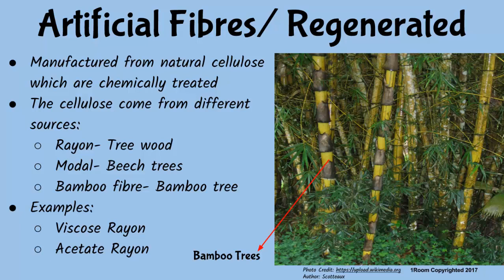Regenerated fibers are manufactured from natural cellulose which is chemically treated. The cellulose comes from various sources: rayon from tree wood fiber, modal from beech trees, bamboo fiber from bamboo, and so on. Examples of regenerated fibers are viscose and acetate rayon.